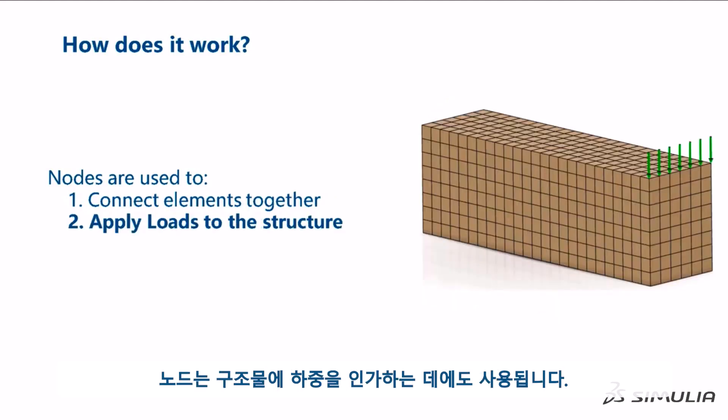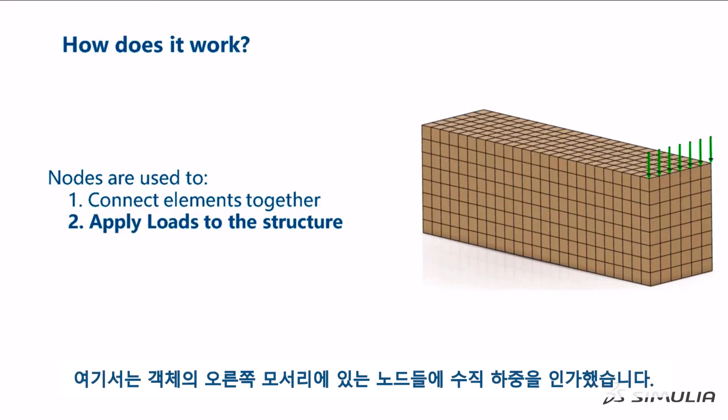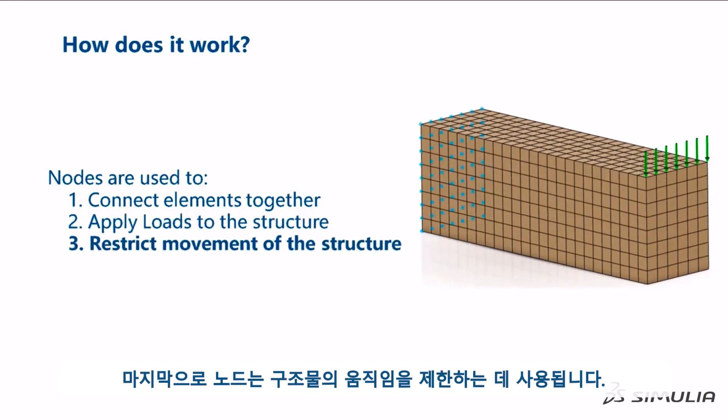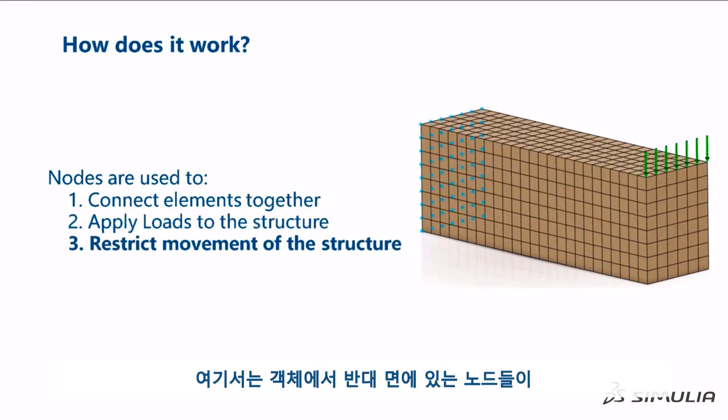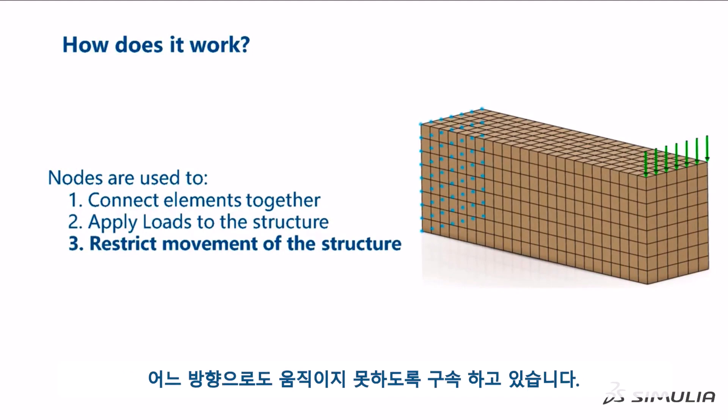Nodes are also used to apply loads to the structure. In this case, we have applied a downward force to the nodes on the right edge of the object. Finally, nodes are used to restrict movement of the structure. In this case, the nodes on the far face of the object are restricted from moving in any direction.